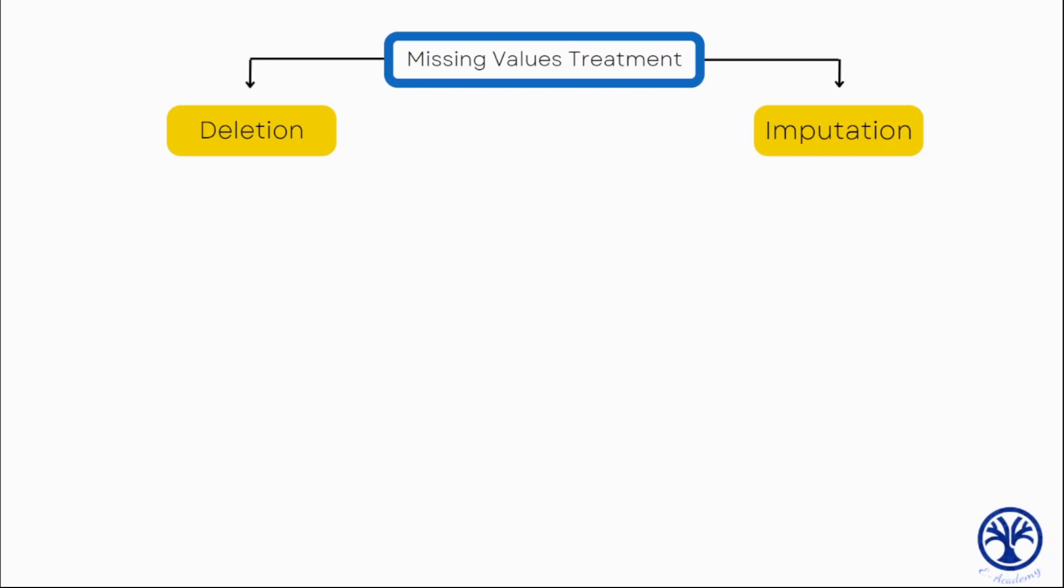Missing data is a very common problem in data analysis and can have a significant effect on the results. There are two main ways to handle missing data: the first is deletion, and the second is imputation, where we fill in the missing data.